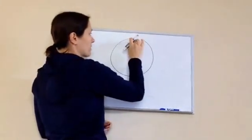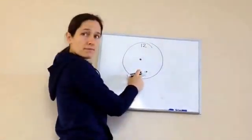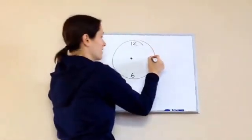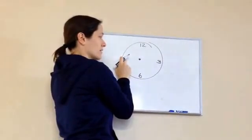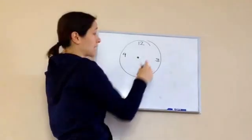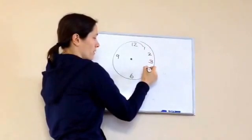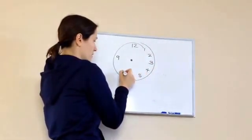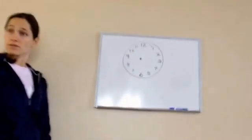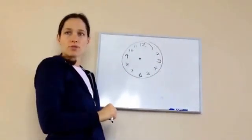Do you remember what number is written at the very top of a clock? 12 — very good. Do you remember what's at the bottom? 6 — very good. Do you remember what's here? 3. And it's going to be 9 — that was the hardest to remember. So I have to fill in two more numbers between each: 1, 2, 4, 5, 7, 8, 10, and 11. It's always good to write the ones you know first to be able to do the rest.